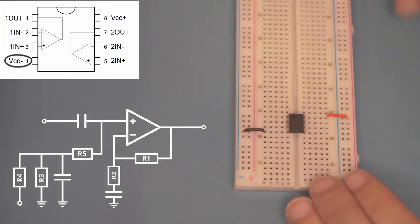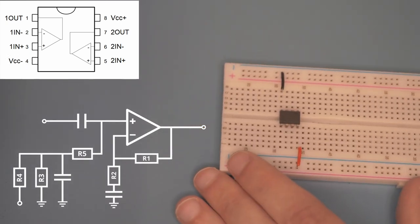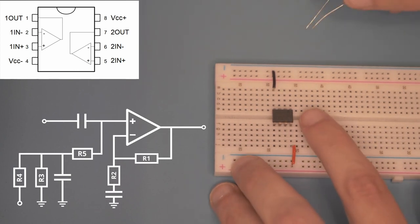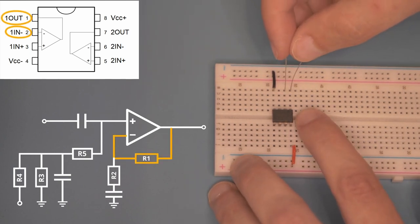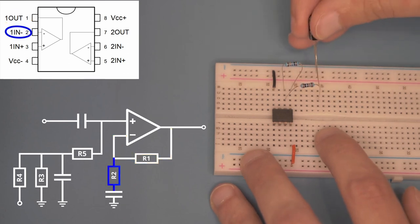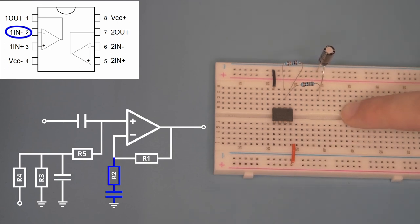Let me turn this to the side to make this next part a little easier to see. This is R1 connecting the output back to the inverting input pin. Next we're connecting the inverting pin to R2 and then through our 1uF capacitor to ground.